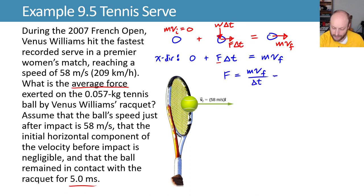We can plug in values of 0.057 kilograms for the ball, 58 meters per second for the final speed, and 5 milliseconds or 0.005 seconds for the time of impact, leaving us with a force of 6.6 times 10 to the second newtons.